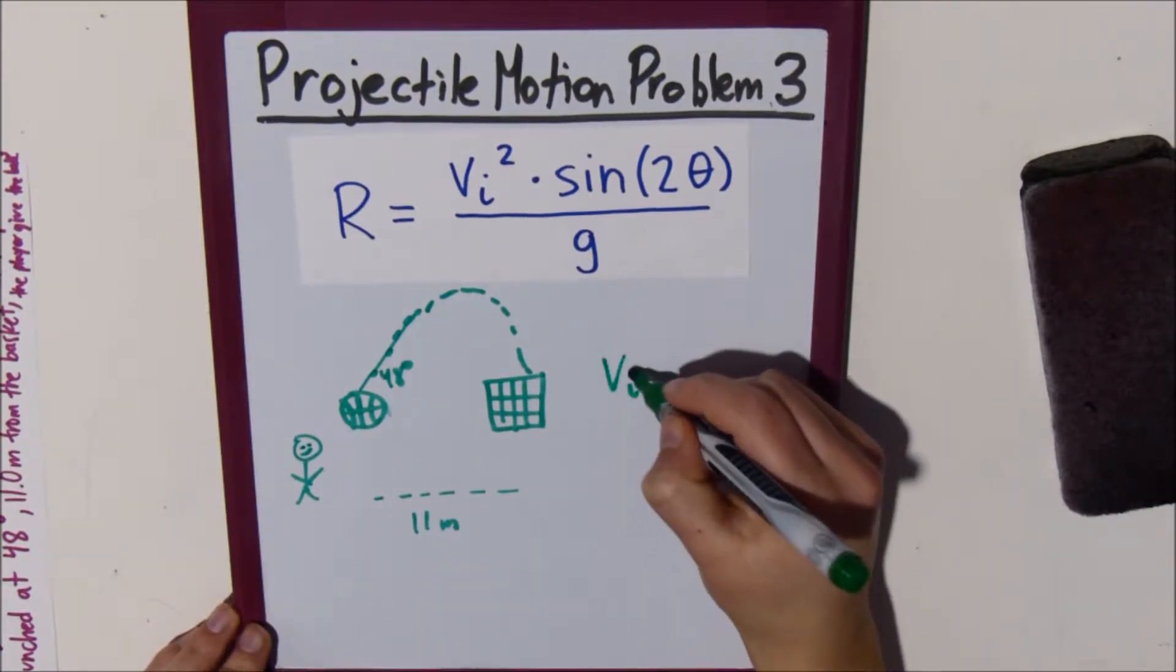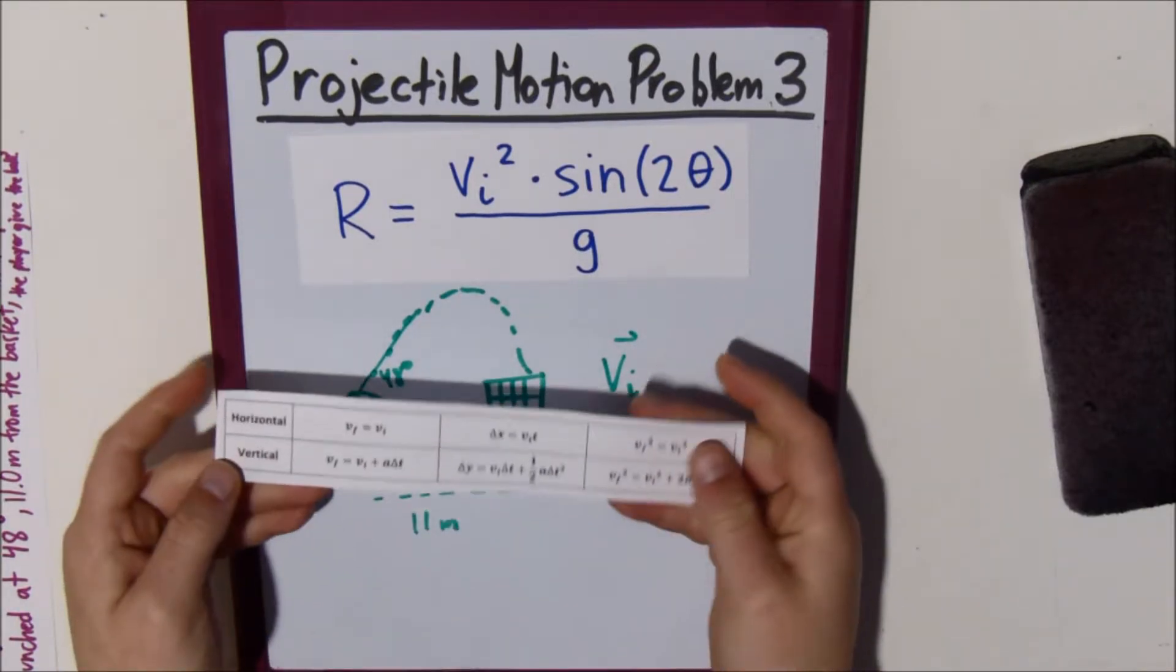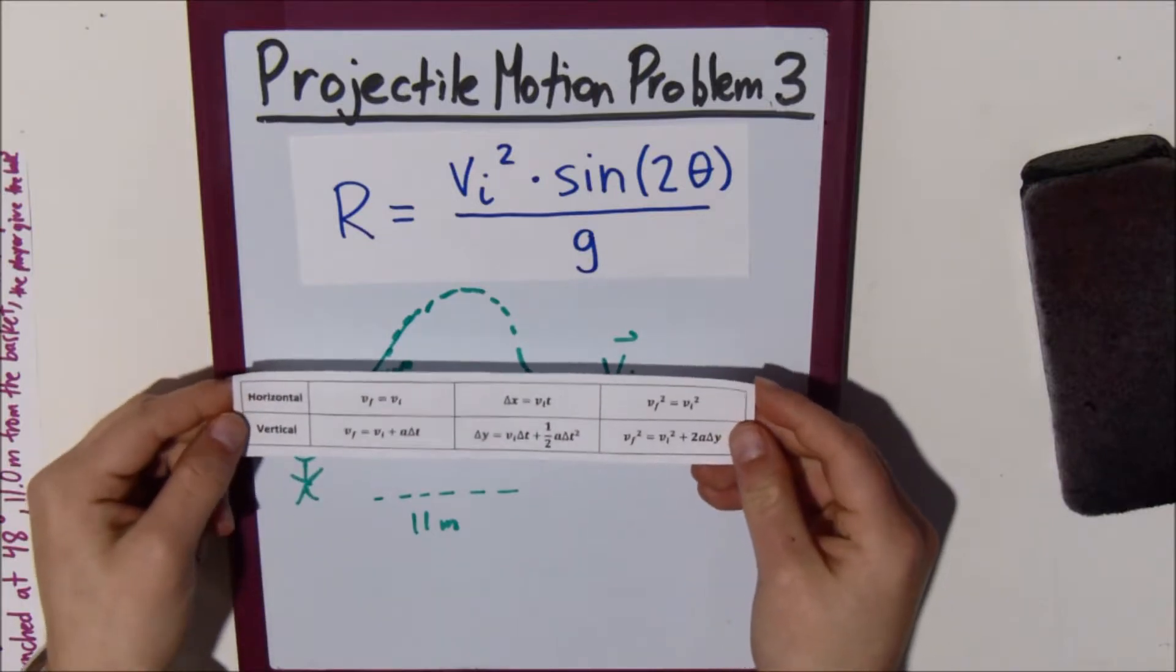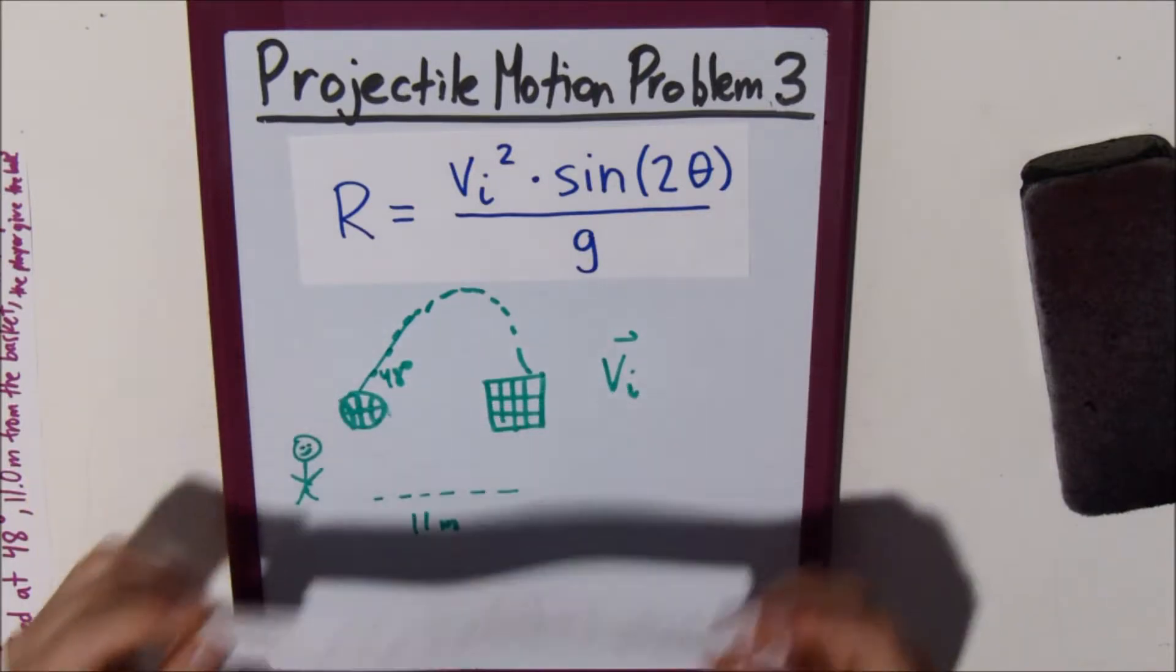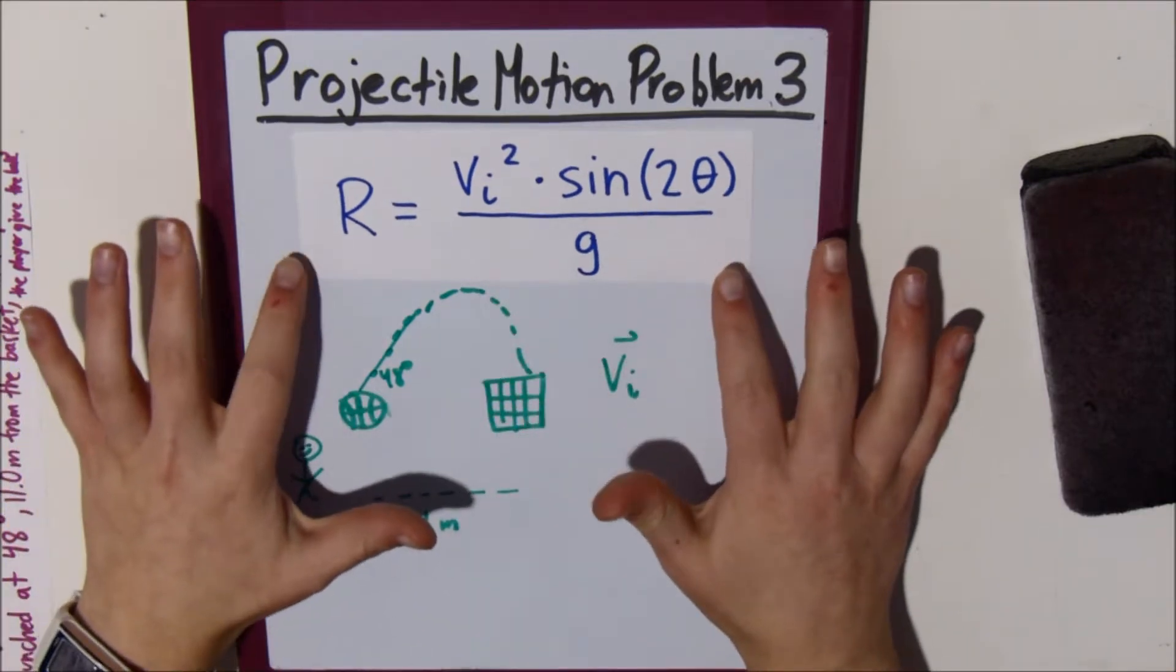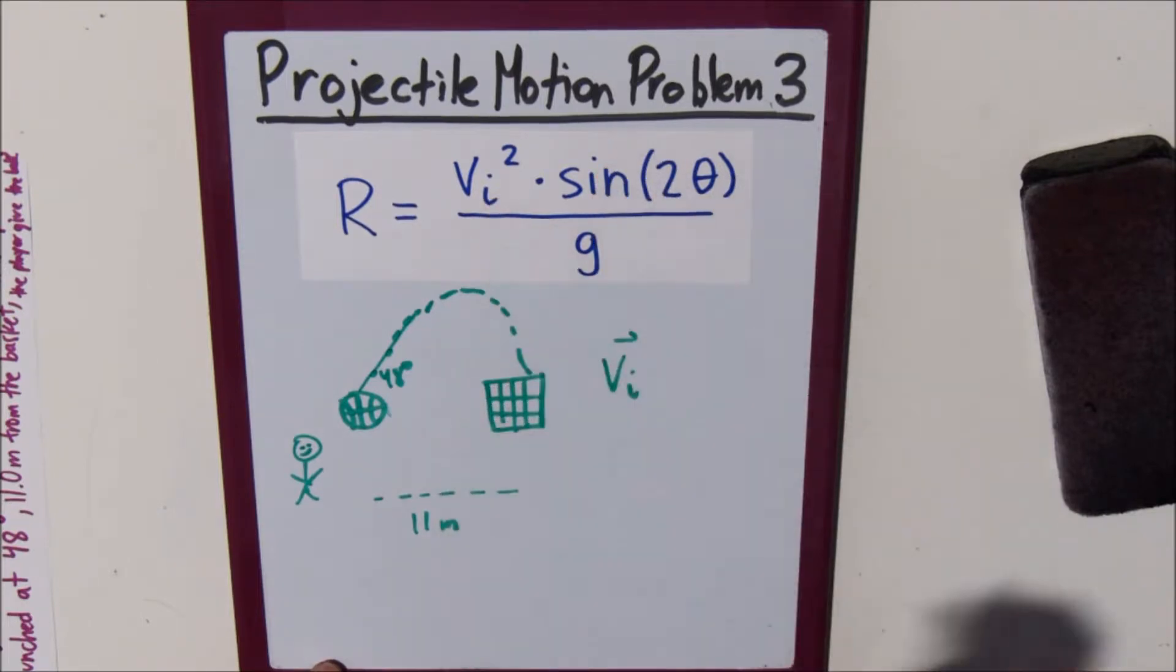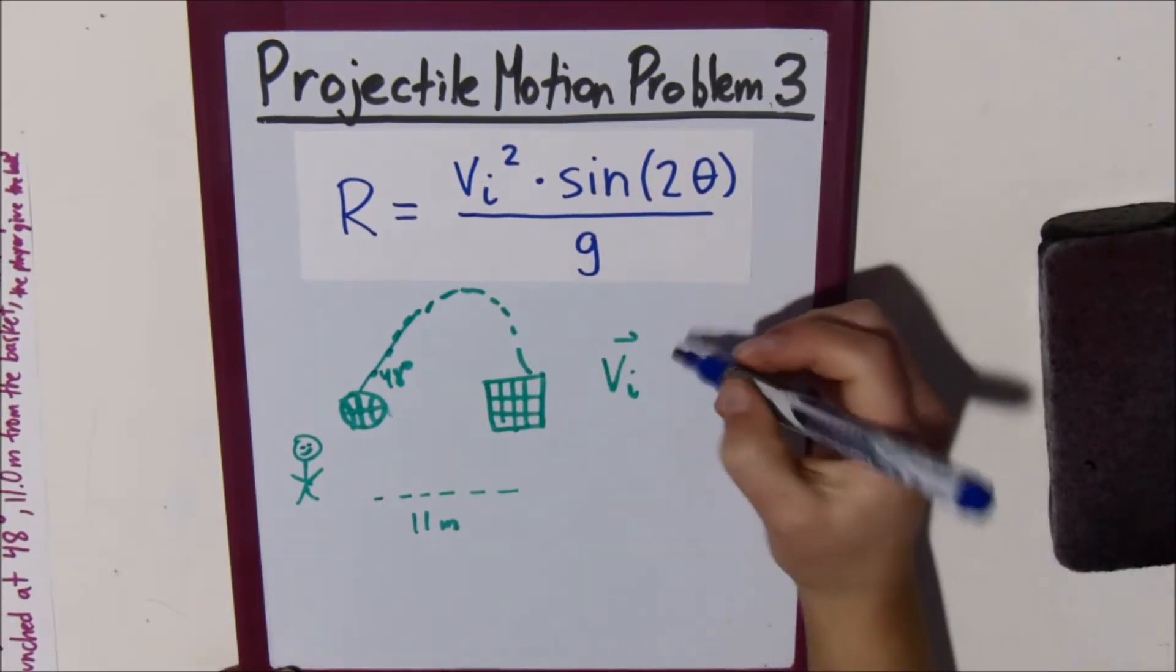Now, you could attempt to use the horizontal and vertical components of the motion equations, but that would be very complicated. So, it's easier to just plug stuff into this equation and then solve backwards for the initial. So, actually, let's write out all the things we know.